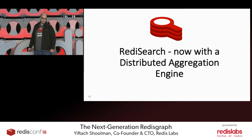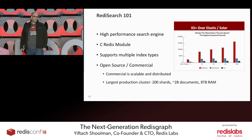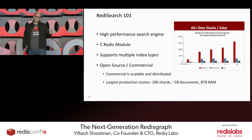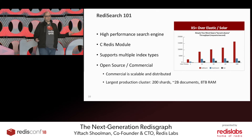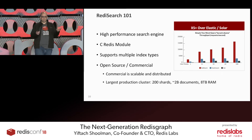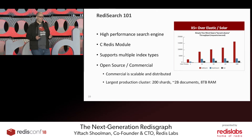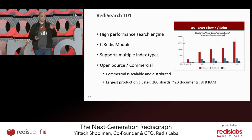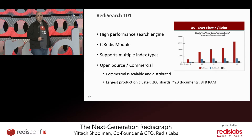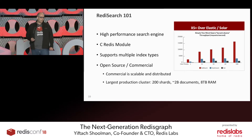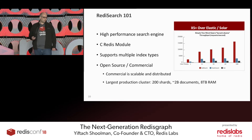About two years ago we started working on RediSearch. Initially we focused on it being a high-performance search engine — it was basically one of the first demos of how to write a Redis module. Over the years we enhanced it to be both a generic secondary index for Redis and a text search engine. We started offering a commercial distributed version over Redis Labs Enterprise Cluster. Currently the largest commercial cluster we have is 200 shards and 2 billion documents.